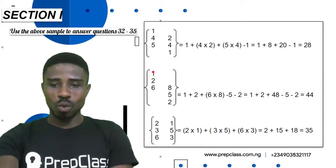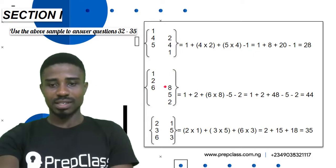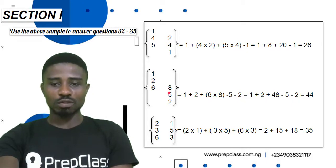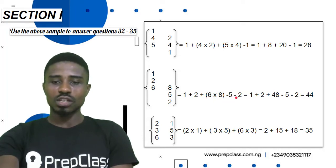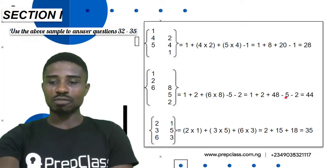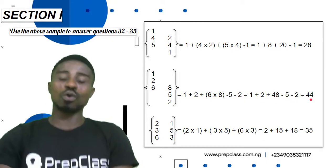For the next sample, we have one and two with no numbers beside them on the right hand side, so it becomes: one plus two, plus (six times eight) minus five minus two. Solving inside the bracket: six times eight is 48. Then one plus two is 3, plus 48 is 51, minus 5 is 46, minus 2 gives us 44.